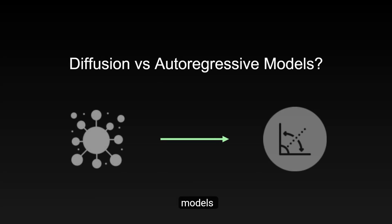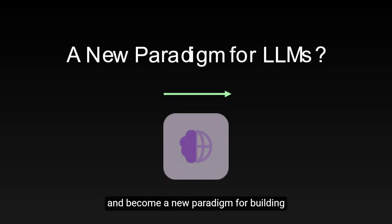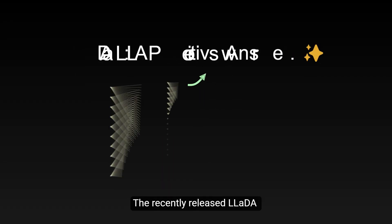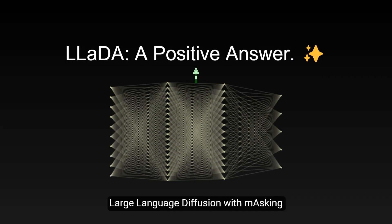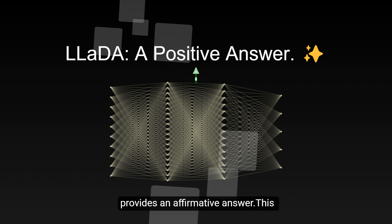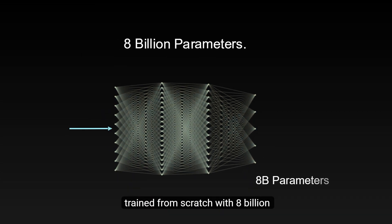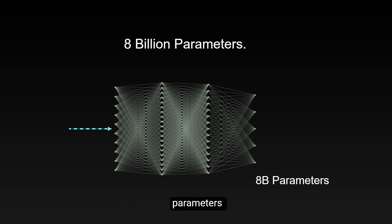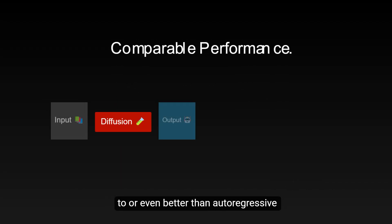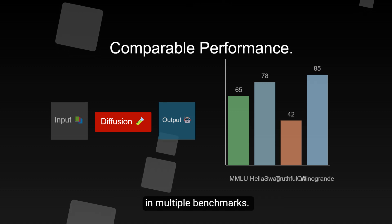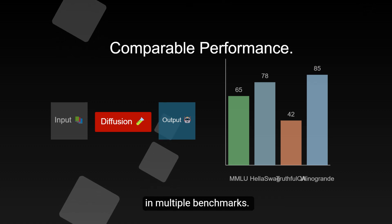Can diffusion models replace autoregressive models and become a new paradigm for building large language models? The recently released LIDA — Large Language Diffusion with Masking — provides an affirmative answer. This diffusion model, trained from scratch with 8 billion (8B) parameters, demonstrates performance comparable to or even better than autoregressive models of the same scale in multiple benchmarks.